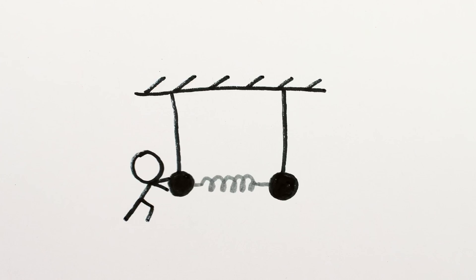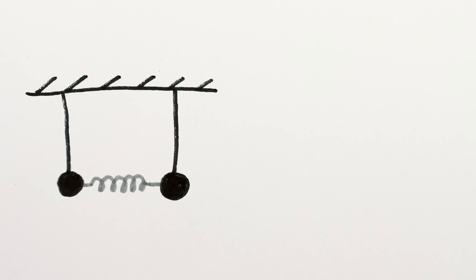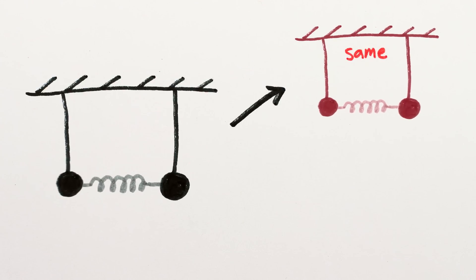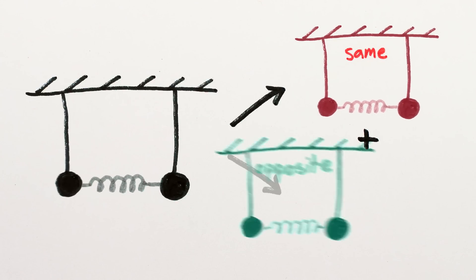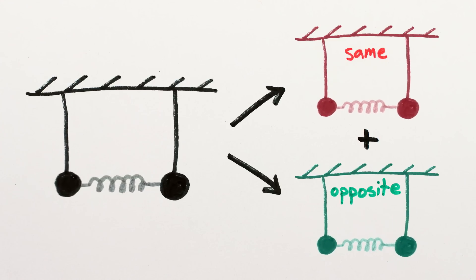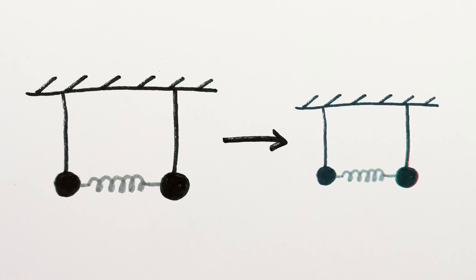But perhaps you interact with the pendulums and push one of them to start its swinging. When you think about it, the first pendulum swinging by itself is actually a superposition of both of them swinging the same way and both of them swinging opposite ways, combined so that the swinging of the second pendulum cancels out.